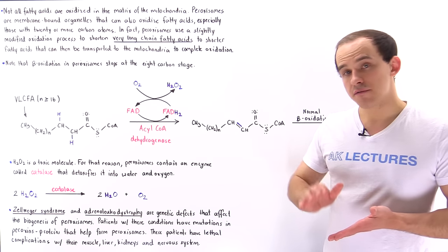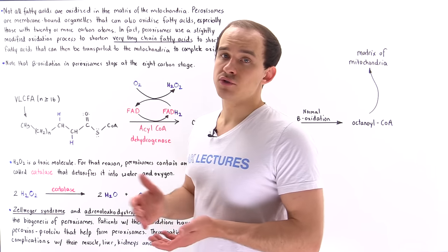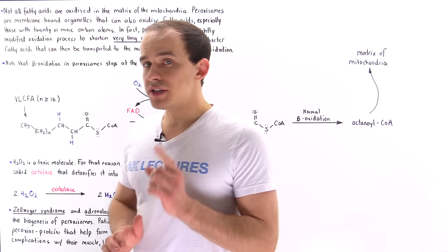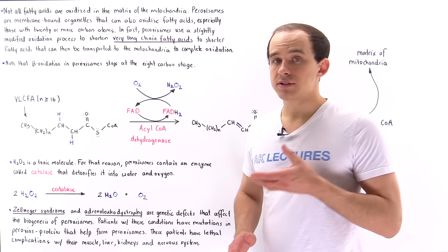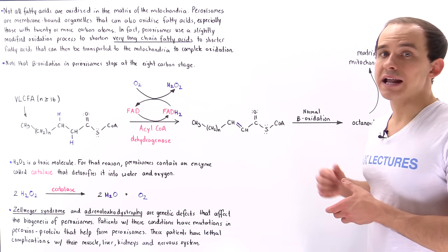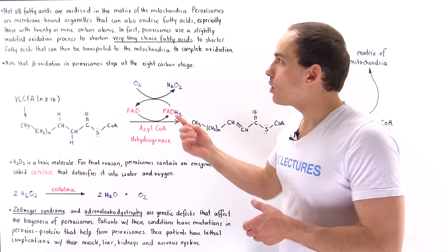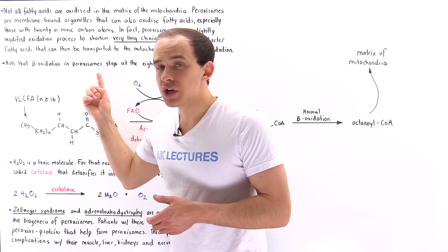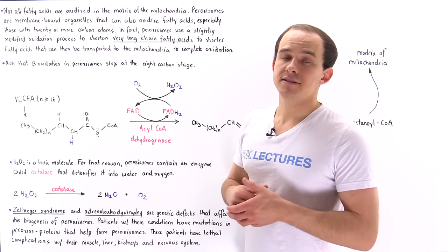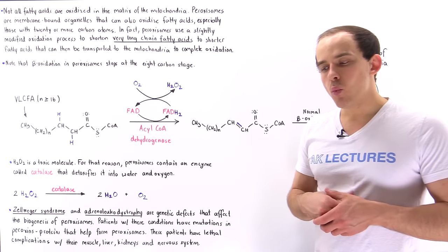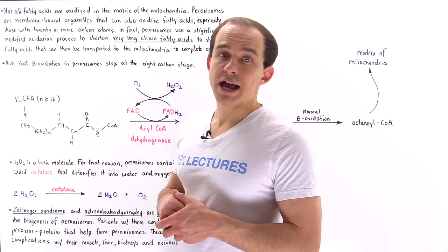Now although the majority of fatty acids are oxidized and broken down in the matrix of the mitochondria, there is another location of oxidation that occurs inside our cells and this is inside peroxisomes. Remember that peroxisomes are membrane-bound organelles that also contain enzymes involved in the fatty acid oxidation process.